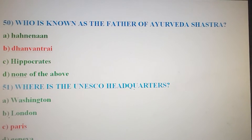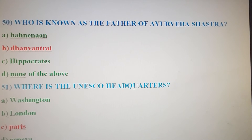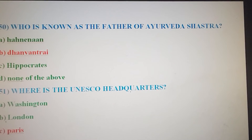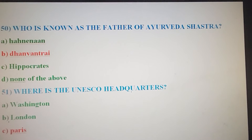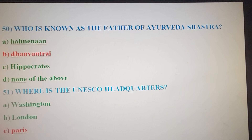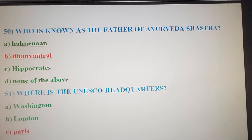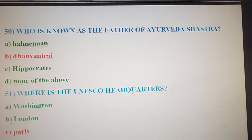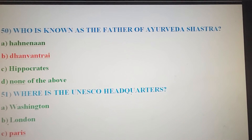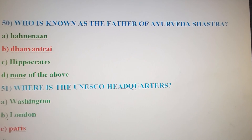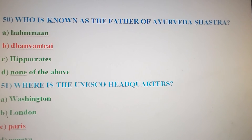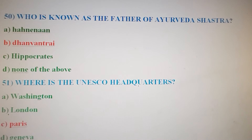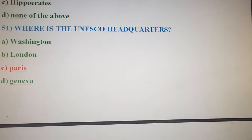Next question: Who is known as the father of Ayurveda? Option A: Hahnemann. Option B: Dhanvantari. Option C: Hippocrates. Option D: None of the above. The correct answer is Option B — Dhanvantari is known as the father of Ayurveda.